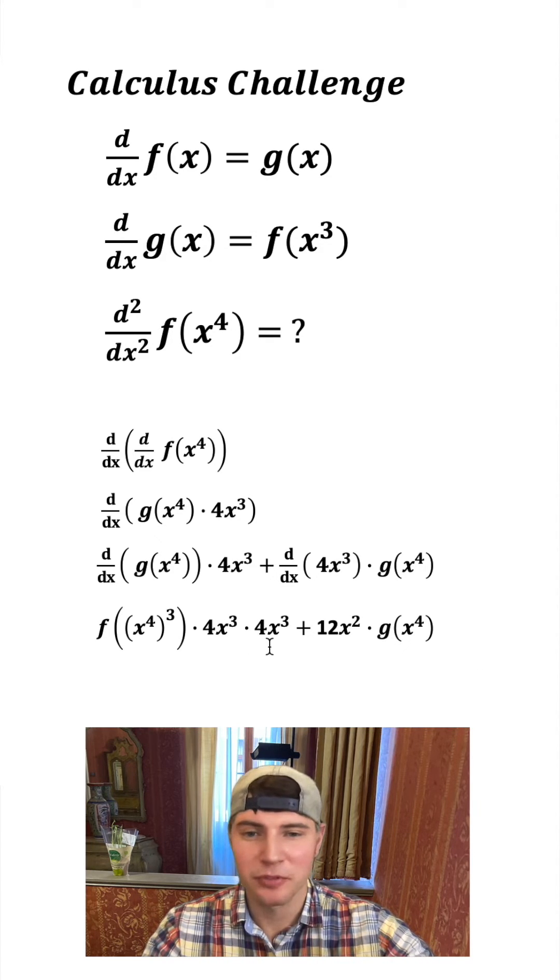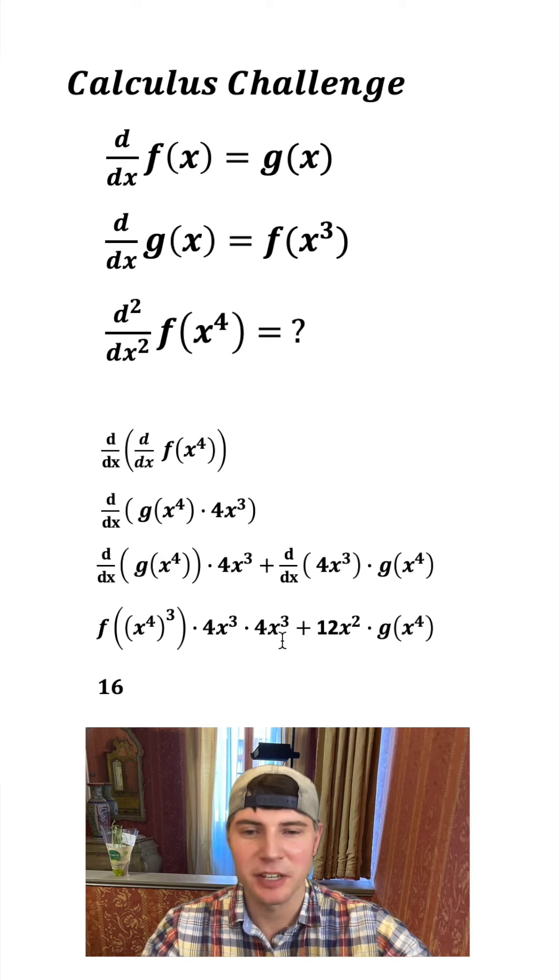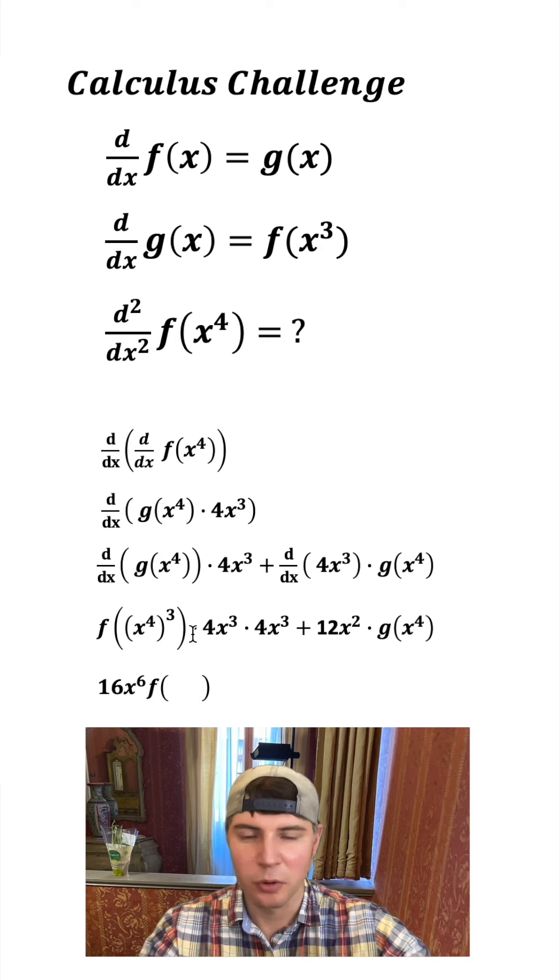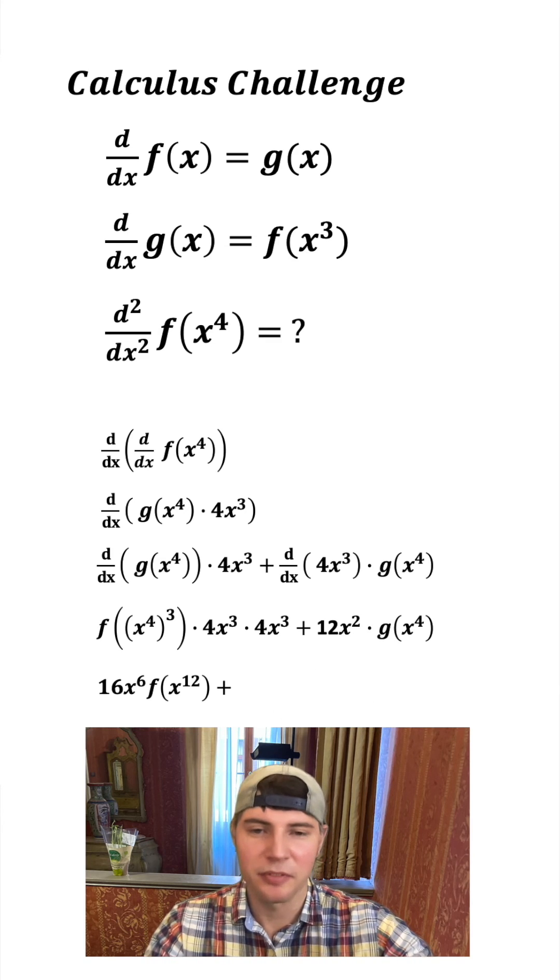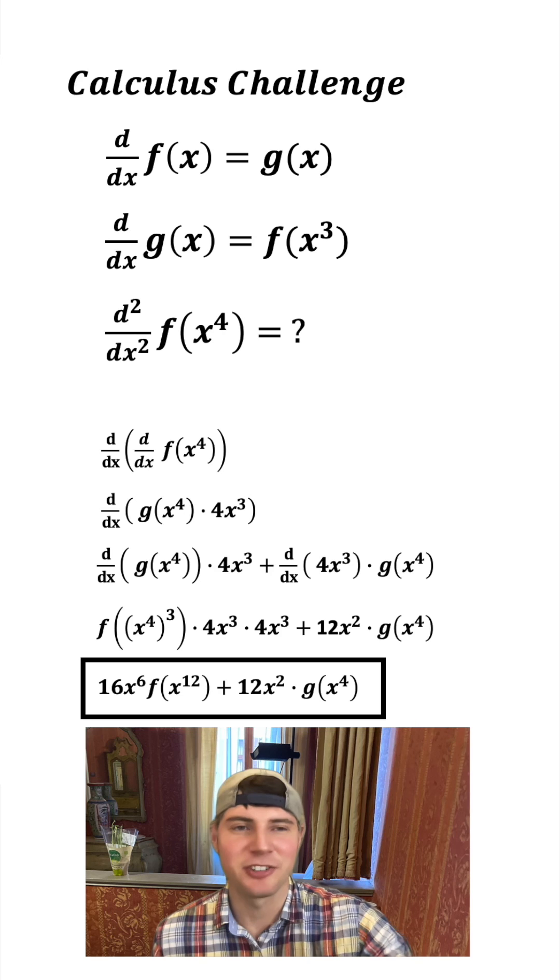We can clean things up. Four times four is 16. X cubed times x cubed is x to the sixth. And then bring this down, and x to the fourth to the third is x to the 12th, plus, and this term can't really simplify, so there it is right there. And that is the answer to the question.